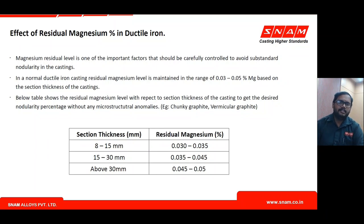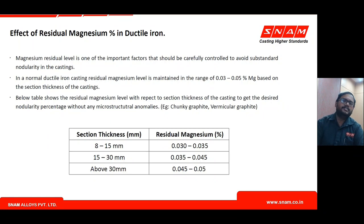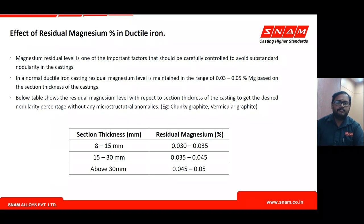Residual magnesium targets depend on casting section thickness. As section thickness increases, cooling rate decreases and graphite nodularity can become poor. For thick-section castings, comparatively higher residual magnesium is needed — in the range of around 0.04% — while thin-section castings with adequate cooling rate do not require high residual magnesium.